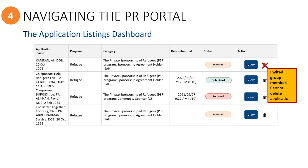Only the primary sponsor can delete an application — an invited group member cannot. So if you want to be removed from an application, you must contact the primary sponsor. As you may recall from the previous segment, you can find their email address displayed on the Group Members page.